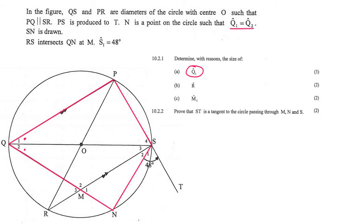What we should identify is this angle here, S1, is the exterior angle. Now we know that if you have a cyclic quadrilateral and you have an exterior angle, that exterior angle is always going to be the same as the interior opposite angle.